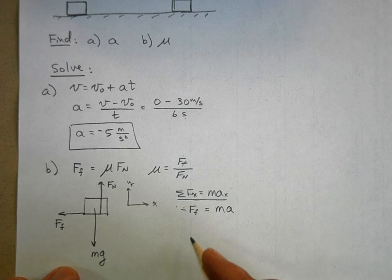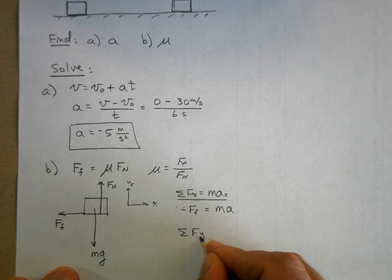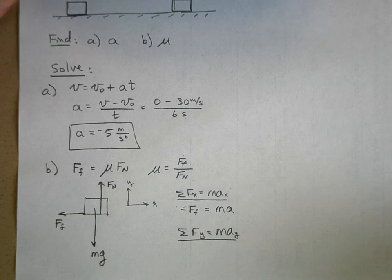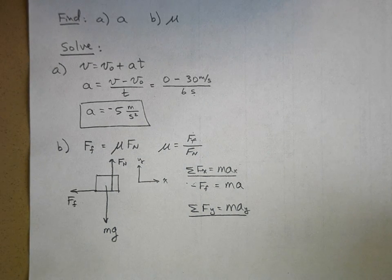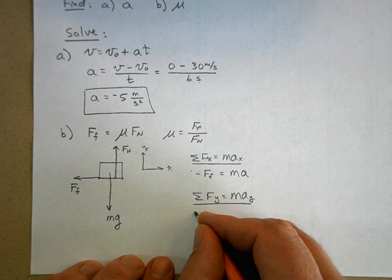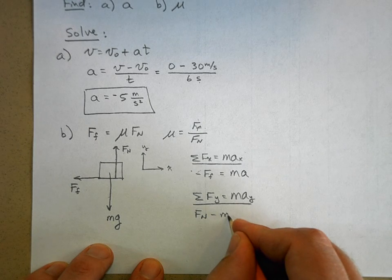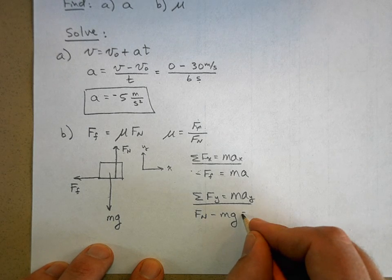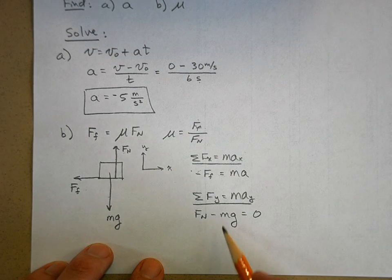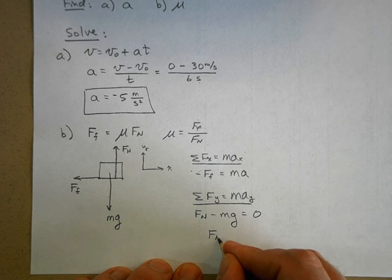Now let's sum the forces in the y direction. It's going to be equal to ma in the y direction. And I look in the y direction and I say, well, there's two forces. I've got the normal force in the positive direction minus the weight equals zero. Now what does this tell me? Well, this tells me that the normal force is equal to the weight.